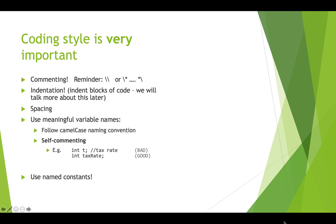The style in your code is very important to make sure that you can read it and remember what you've done when you go back and look at it later, and also if other people need to look at your code and modify it. We've already talked a little bit about commenting — you can do single line comments with the slash slash, or comments that go across multiple lines with the slash star notation. Indentation is also important, so you want to indent code that's in between any sets of curly braces, and that really helps set off and mark that code as being part of something. We'll talk more about that later.